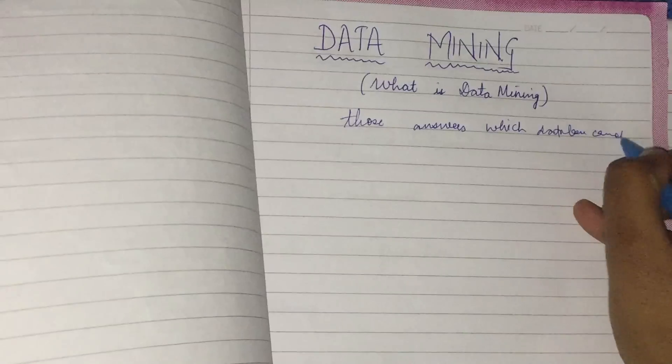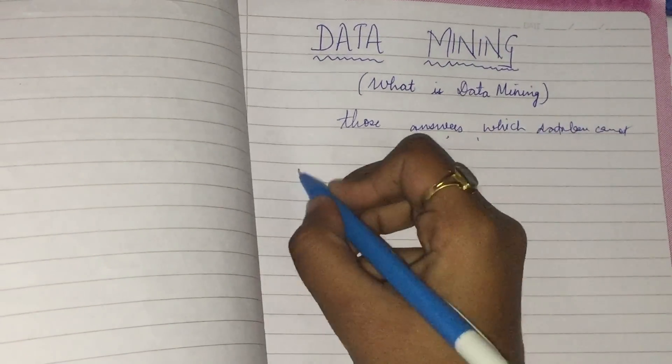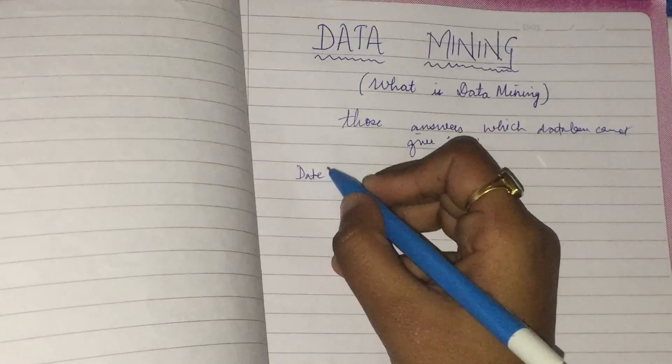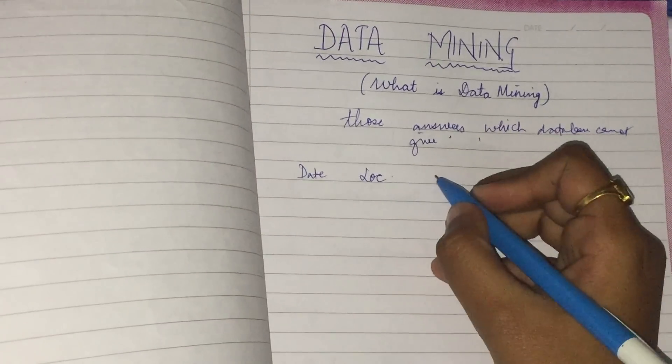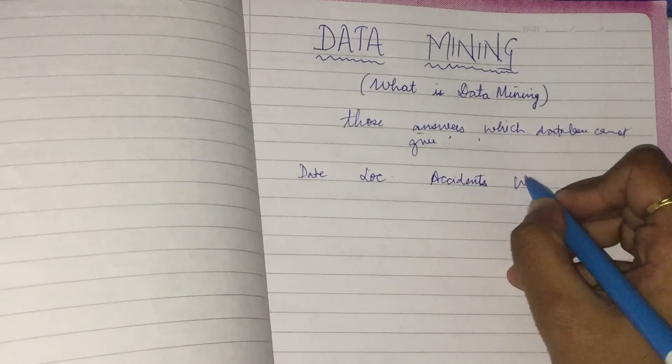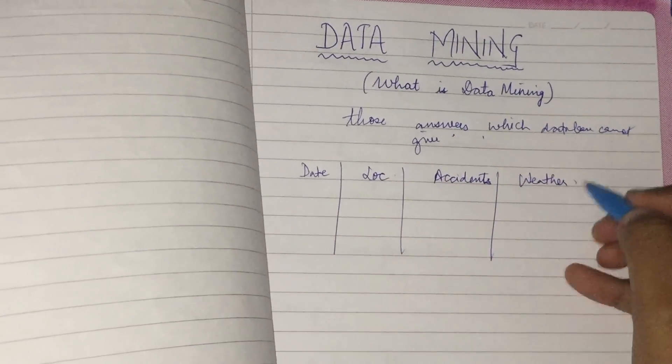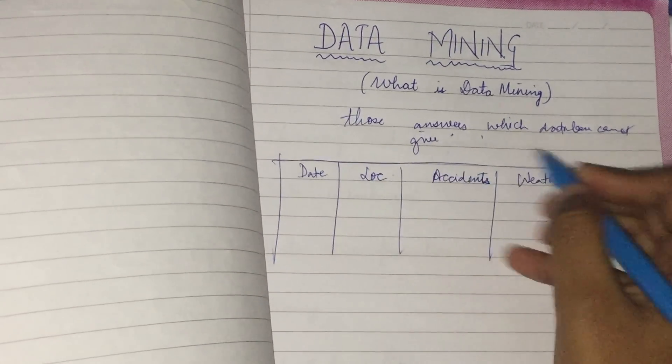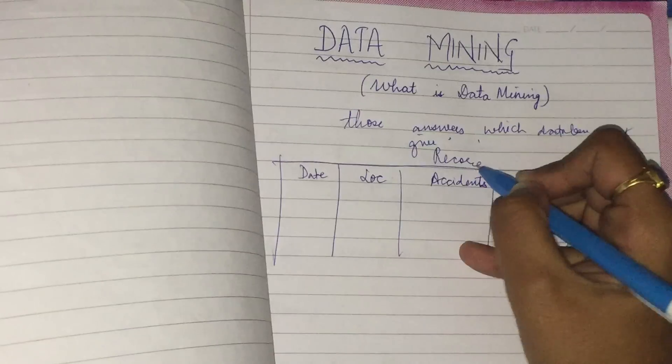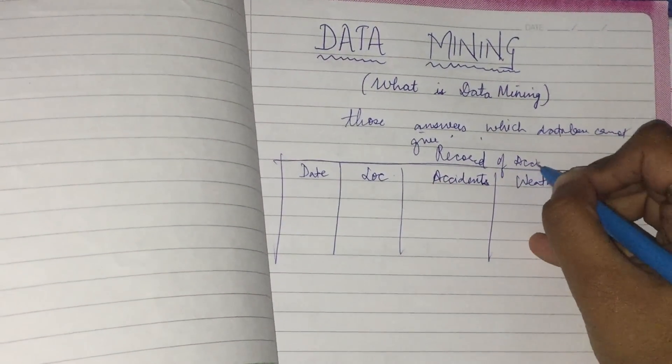For example, I have a table of date, location, number of accidents, and what kind of weather was there. This is a table which stores the record of accidents at a particular location. Suppose Chandigarh in sector 7, so that way I have so many records.